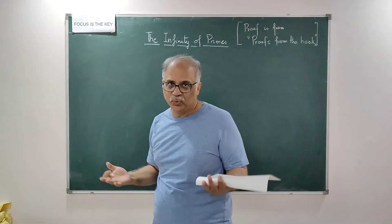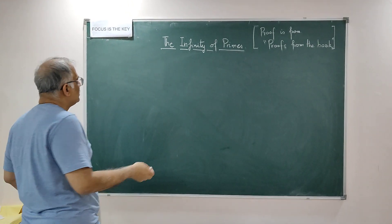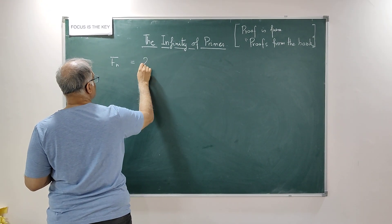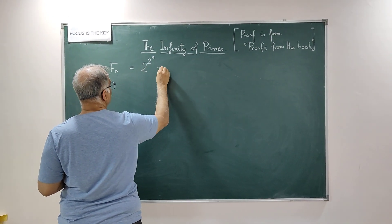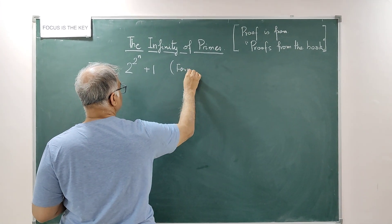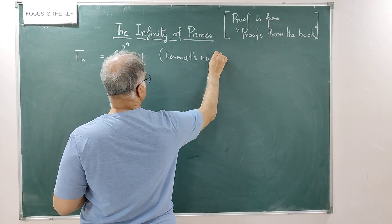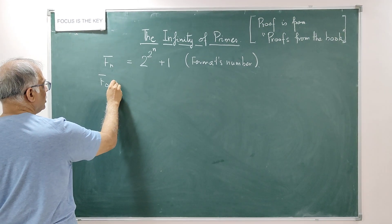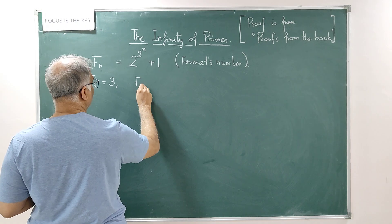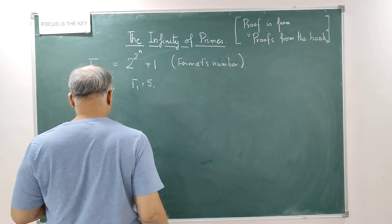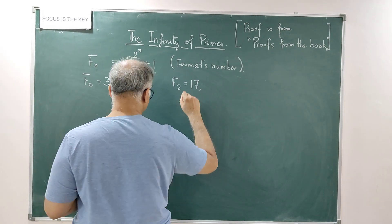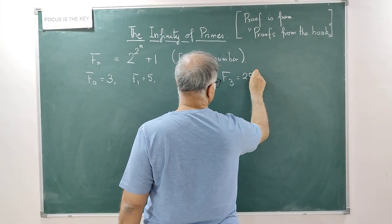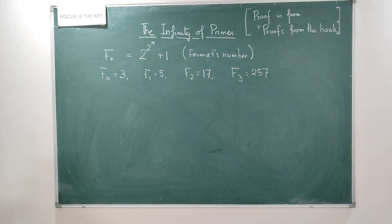But here the second proof uses what is called the Fermat's numbers. Any F_n = 2^(2^n) + 1, so this is called the Fermat's numbers. You can try out for some little part: F_0 is 3, F_1 is 5, F_2 is 17, F_3 is 257, so here it goes on.